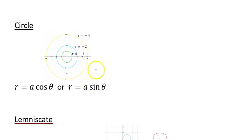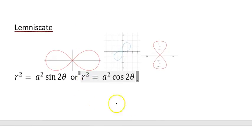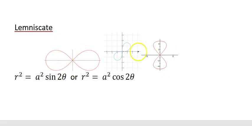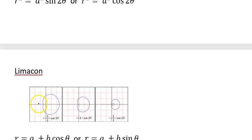The next one is a lemniscate. These kind of remind me of little infinity signs — they can be horizontal, vertical, or on a diagonal. Their equation is a little different because it starts with r squared. We have r squared equals a number squared times the sine of two theta, or r squared equals a number squared times the cosine of two theta.